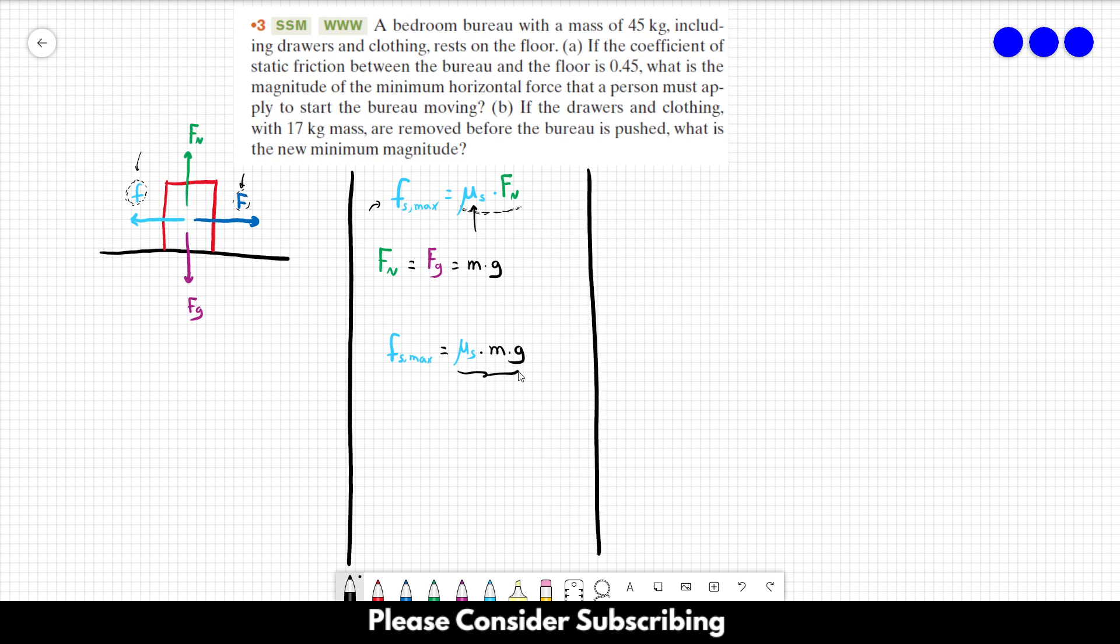We just have to make this calculation here and then we have the answer. So for letter A, the minimum force, let's call it just F minimum, is equal to 0.45 times its mass, which is 45, times the gravity, which is 9.8. And this is going to give us roughly 198 newtons. So that's the answer of letter A.